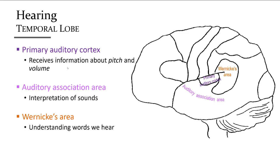Just posterior and adjacent to the primary auditory cortex is Wernicke's area. This region is specific to the left hemisphere and interprets language so that we understand the words that we hear.